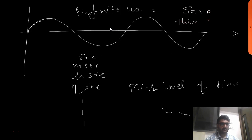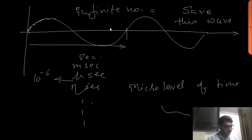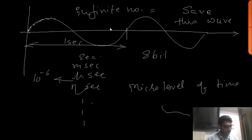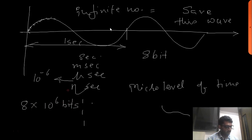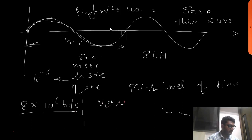What happens if I have to save this waveform? Suppose the resolution is microseconds — that is 10 to the power of minus 6. If the time period is one second and I have to store it in a digital system using 8 bits, then I will require 8 × 10⁶ bits to store only one cycle of the waveform. This is very high data — it is not possible for us to save each and every point.